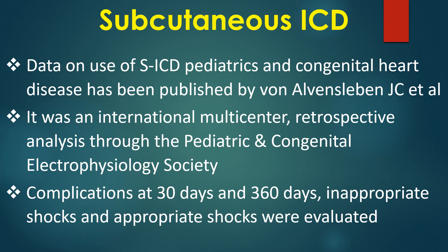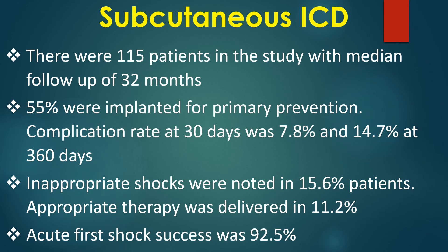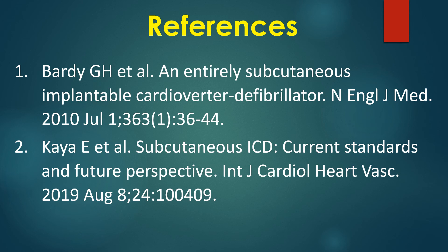It was an international multicenter retrospective analysis through the Paediatric and Congenital Electrophysiology Society. There were 115 patients in the study with a median follow-up of 32 months. 55% were implanted for primary prevention. Complication rate at 30 days was 7.8% and 14.7% at 360 days. Inappropriate shocks were noted in 15.6% of patients. Appropriate therapy was delivered in 11.2%. Acute first shock success was 92.5%.